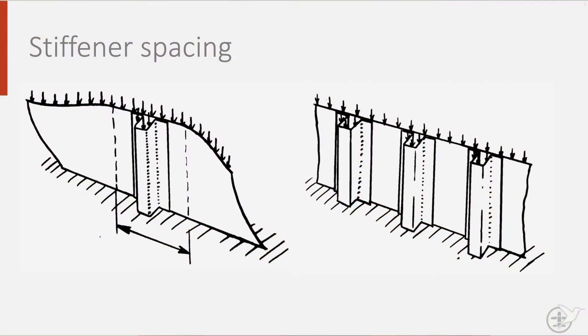Next to the shape of the stiffener, we can also vary their number, and therefore how far they are spaced apart. If we were to add only one stiffener to a panel, the effect of stiffening is limited and only has a local effect on the stability of a shell. Depending on the shape or geometry of a stiffener, it is possible to determine an effective width, which allows you to choose a suitable stiffener spacing.